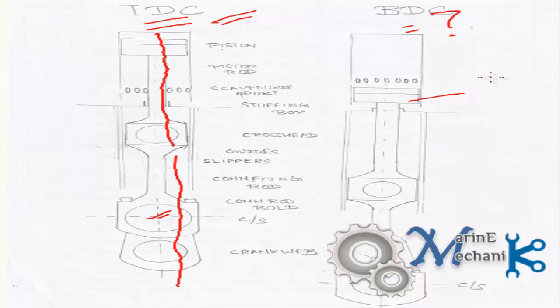So for a complete rotation, we have two dead centers: one is the top dead center and the other is the bottom dead center.